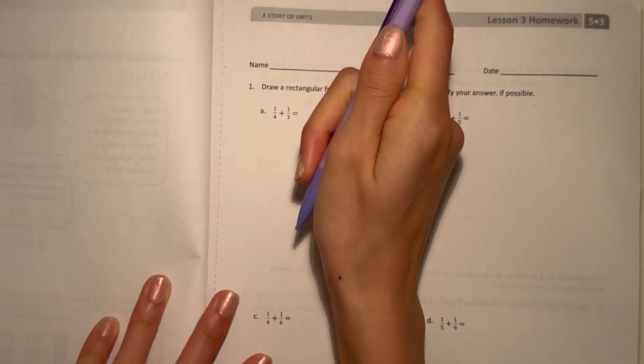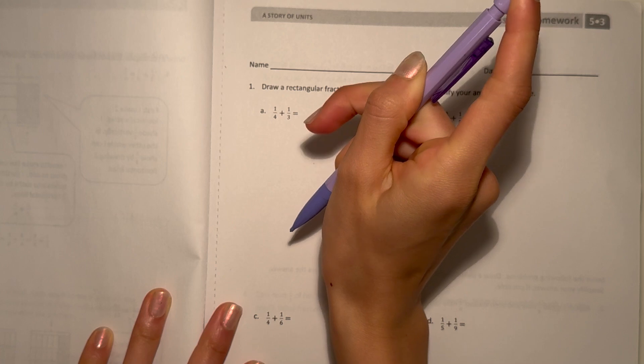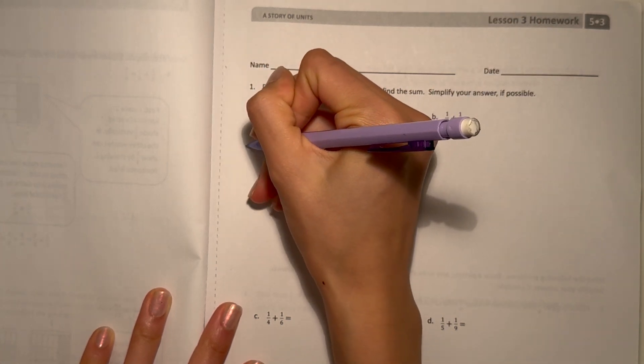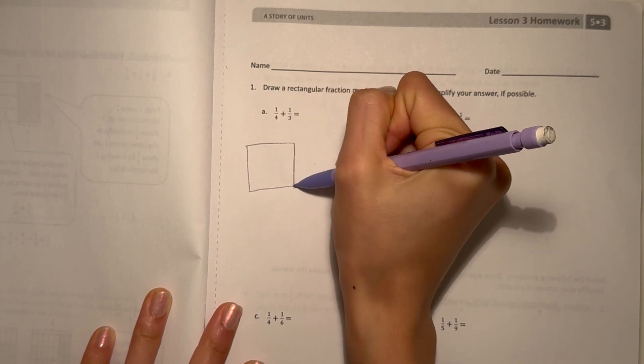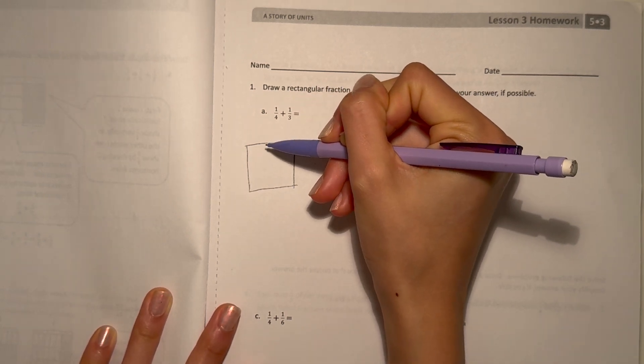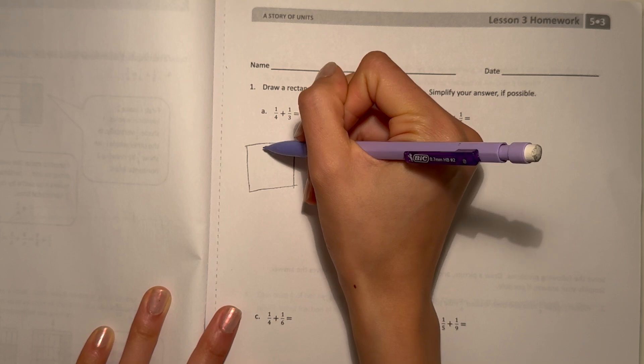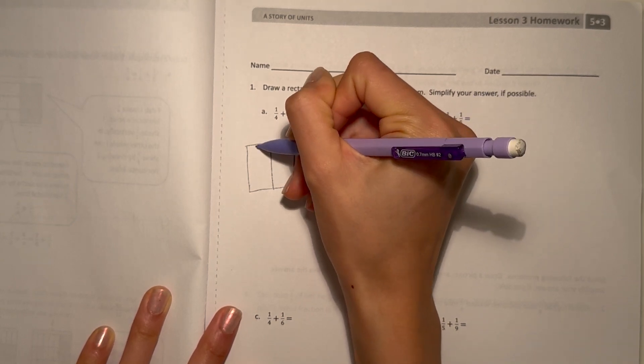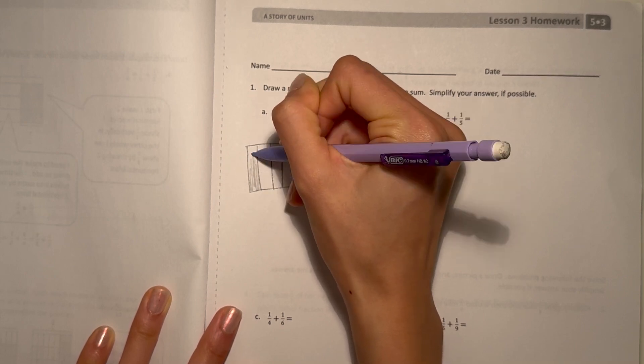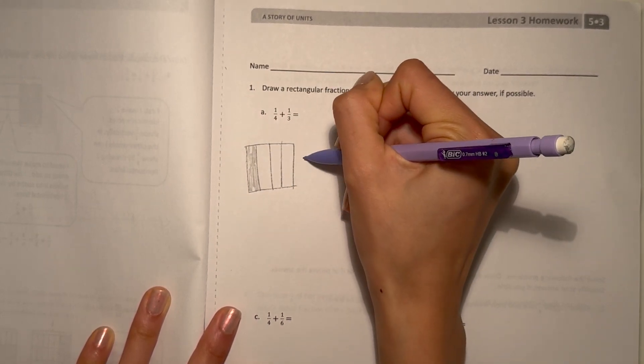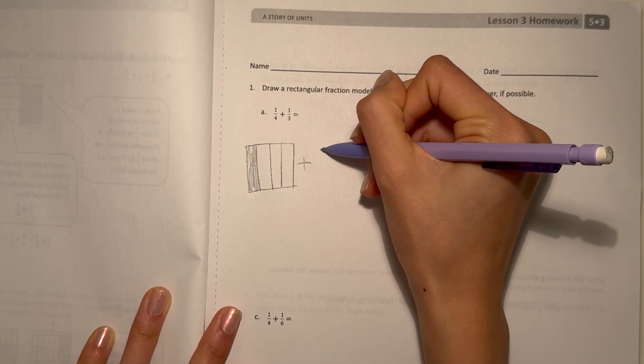So one-fourth, draw a little, you're going to first make the first one vertical. So I'll split into fourths and shade in one-fourth. Plus, because we're doing addition, one-third.